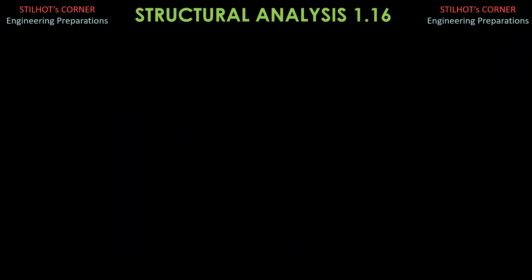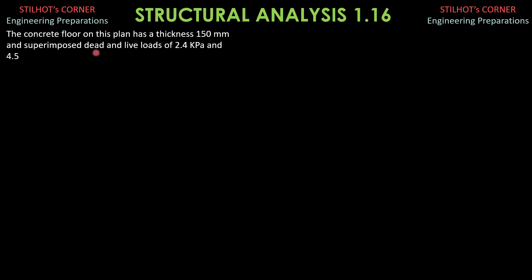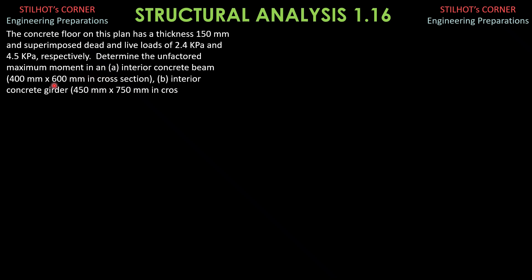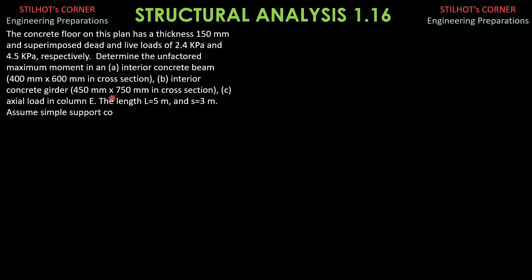Let's have this problem on two-way load distribution. The concrete floor on this plan has a thickness of 150 mm and superimposed dead and live loads of 2.4 kilopascals and 4.5 kilopascals respectively. Determine the unfactored maximum moment in: A, an interior concrete beam 400 mm by 600 mm in cross-section; B, an interior concrete girder 500 mm by 750 mm in cross-section; and C, the axial load in column E. The length L is 5 meters and S is 3 meters. Assume simple support connections. The specific weight of concrete is 23.6 kilonewtons per cubic meter.